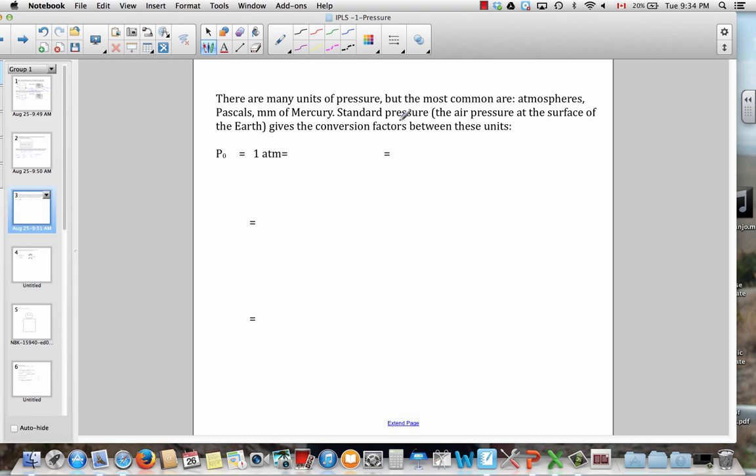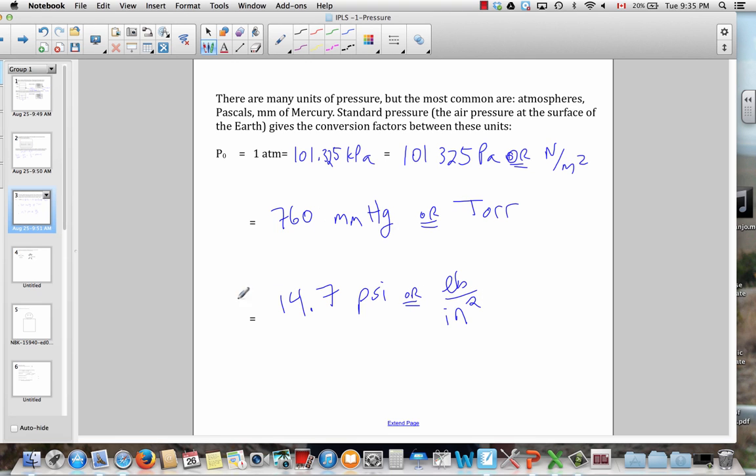Now there's many units of pressure. For instance, there's atmospheres. And the conversion factors are all given in terms of standard pressure, the pressure on the surface of the Earth. You may know from your chemistry classes that atmospheric pressure is 101,325 kilopascals or 101,325 pascals. Now a pascal is a newton per square meter. In other units, millimeters of mercury. That's 760 millimeters of mercury. Or as it's sometimes written, torr, named after Torricelli. And then it's 14.7 psi. What's a psi? It's a pound per square inch. So that's atmospheric pressure.